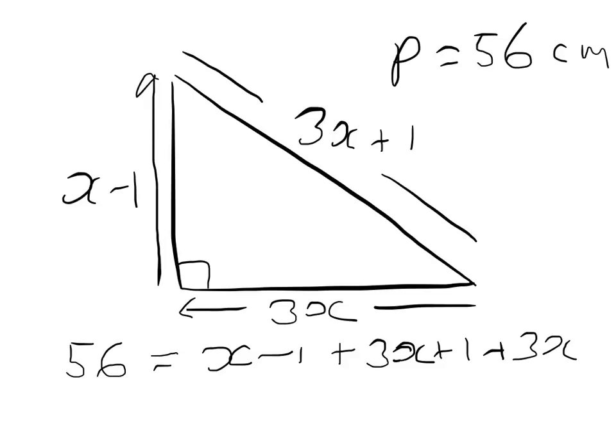Now it's a fairly simple expression to simplify. So we get 56 equals - the minus 1 and plus 1 cancel, and the x's come to 7x: 3x and 3x. So that tells me then that x is equal to 8.